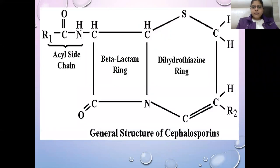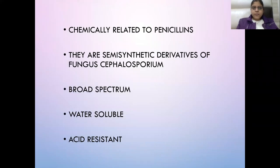This is the beta-lactam ring and the five-sided dihydropyrimidine ring, which is different in all the beta-lactam antibiotics — this is the structure of cephalosporins. They are chemically related to penicillins and are semi-synthetic derivatives of the fungus Cephalosporium. These are broad spectrum, effective against both gram-negative, gram-positive, and anaerobic bacteria.